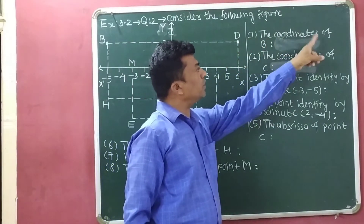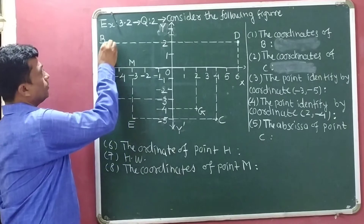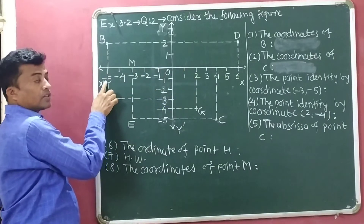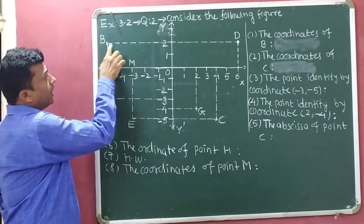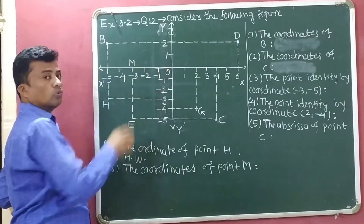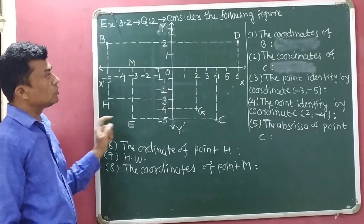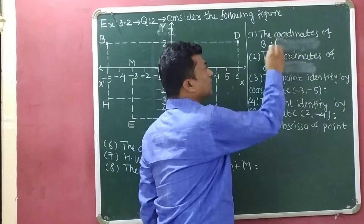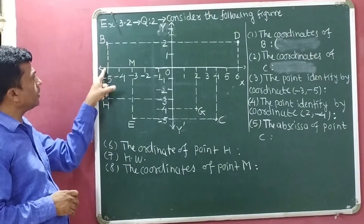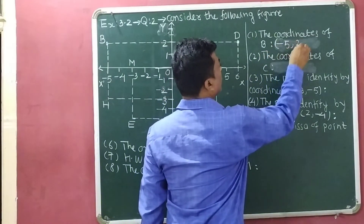Question number 1: The coordinates of B — here we have to identify the coordinates of point B. Point B is available here and this perpendicular touches at minus 5 on the x-axis. So, the x-coordinate of point B is minus 5, and this perpendicular touches at 2 on the y-axis. So, the y-coordinate of point B is 2. The coordinates of point B are (minus 5, 2).